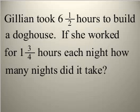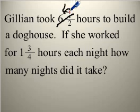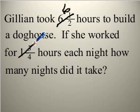Instead of starting by trying to figure out this problem, what we're going to do is take the numbers and make them simpler. We're going to use some very simple non-fractional numbers — whole integers — to see how to solve this problem. So we're going to change six and a half to just six, and one and three quarters to just two.